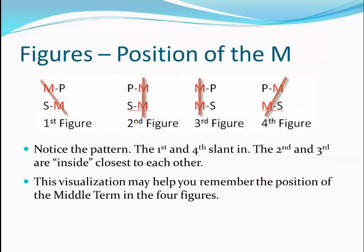Here's a handy way to remember the position of the middle terms in the four figures. In the first figure, if you draw a line through the middle terms, the line will lean to the left. The second and third figures are arranged so the middle terms are in the middle — in the predicate position of the second figure and the subject position of the third figure. The fourth figure is arranged so a line drawn through the middle terms will lean to the right. The system of mood and figure makes analyzing syllogisms much easier.